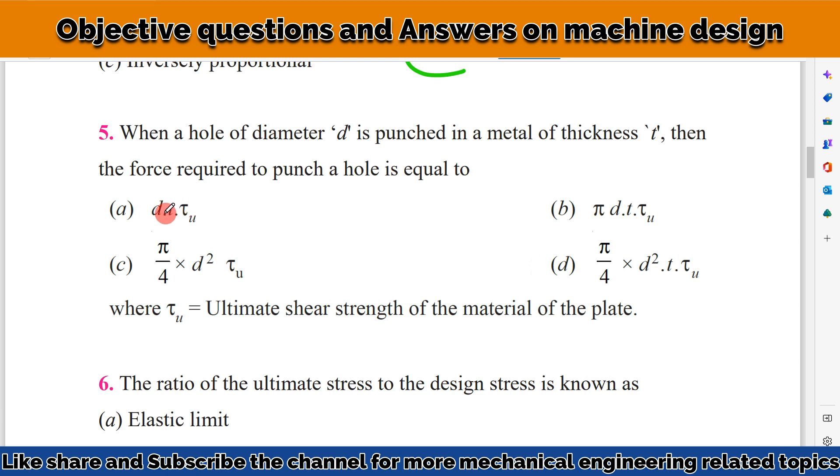The correct answer here is B: π × D × T × τu, where τu means ultimate shear strength of the material of the plate.